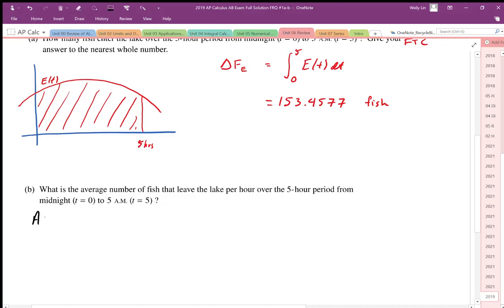The average value is equal to 1 over B minus A, times the integral from A to B of the function that we're trying to find the average of. In this case, we want to find the average value of the rate, the average number of fish that leave the lake per hour. So that's the average value of L of t.